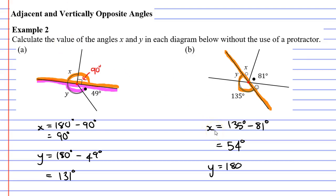So Y is 180 degrees minus 135 degrees. And when I subtract that, I find out that Y is actually a 45 degree angle.